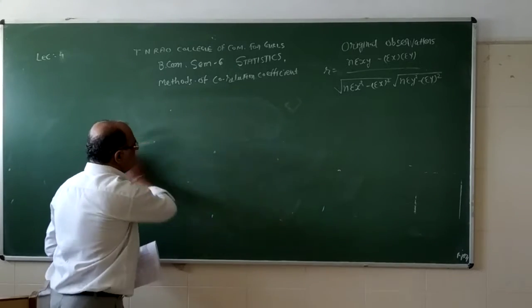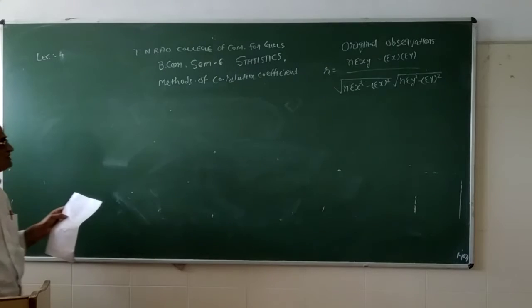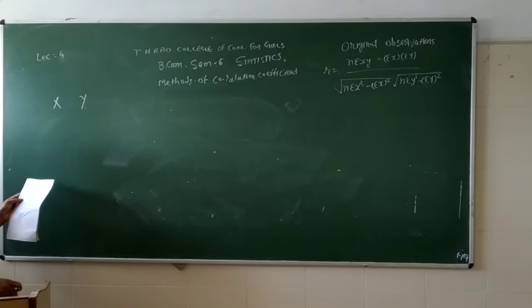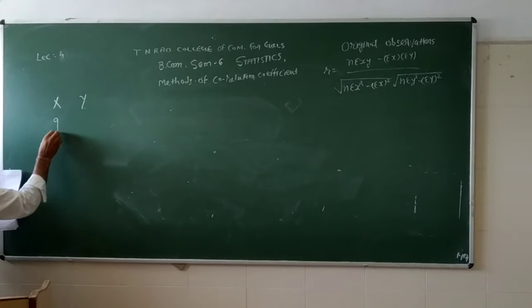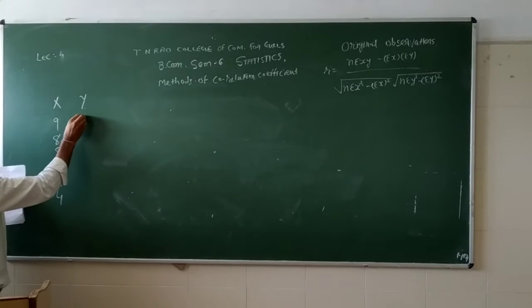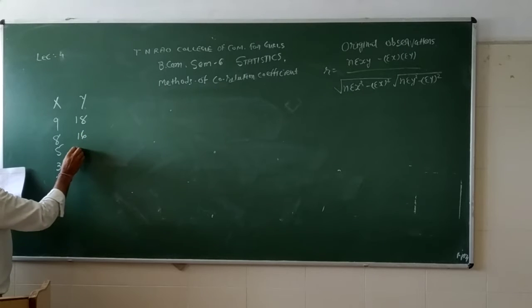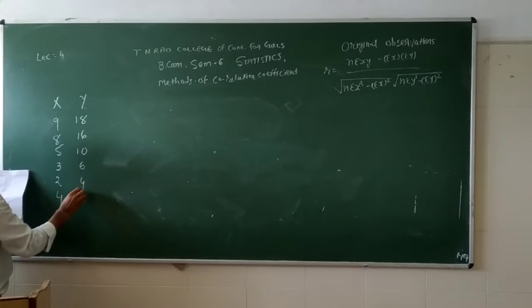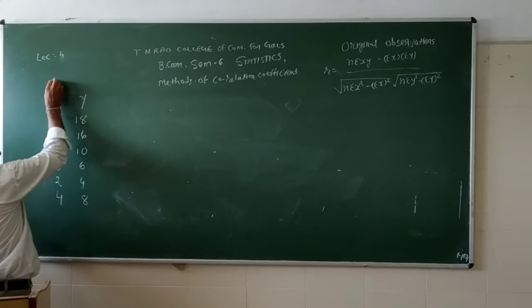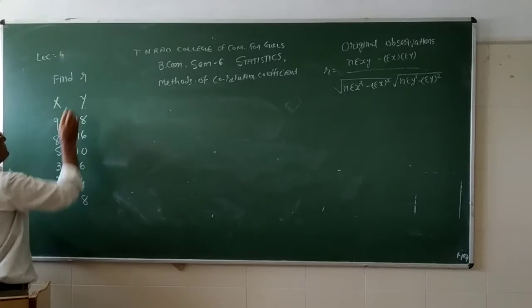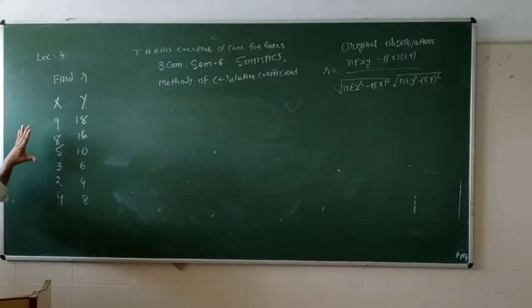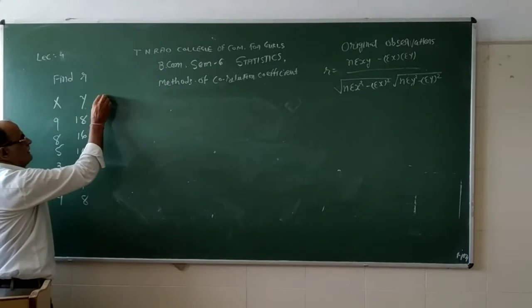We are given a problem to find the coefficient of correlation for two variables x and y. The question asks us to find the coefficient of correlation, that is, find R. The two variables x and y are given. First, find out the squares of x and y.